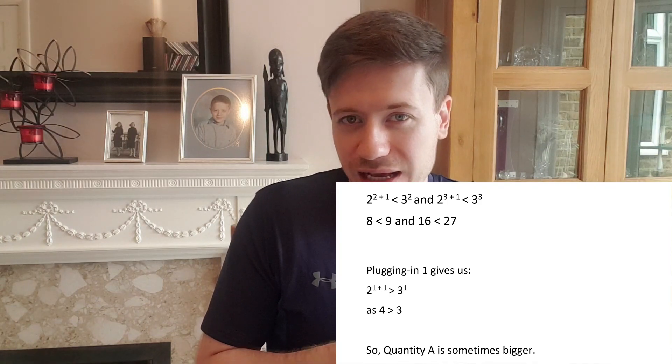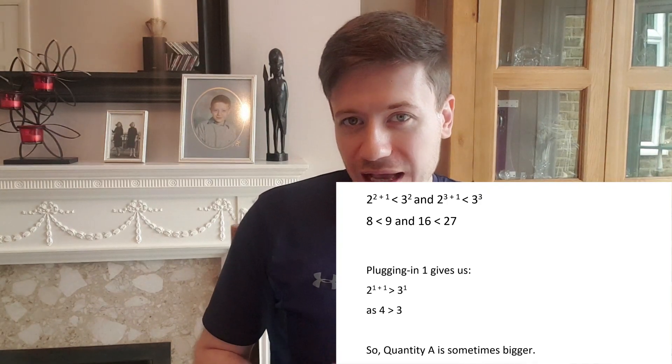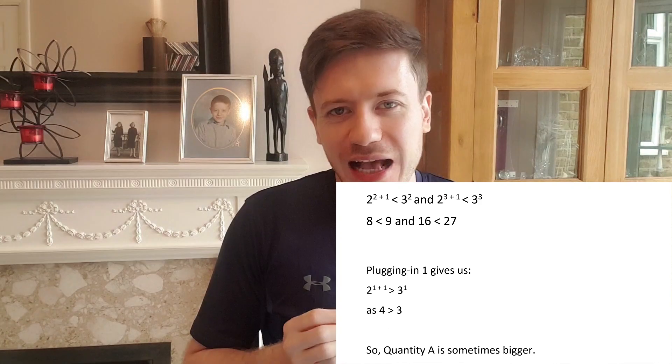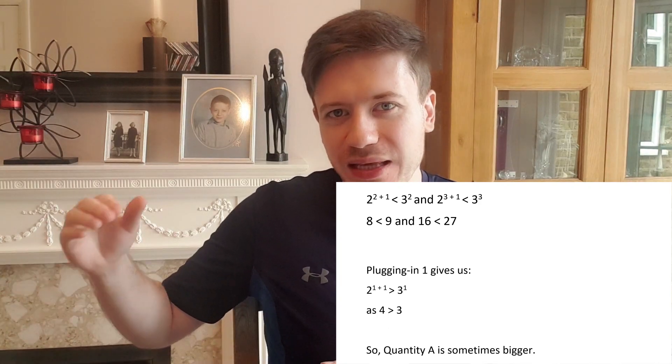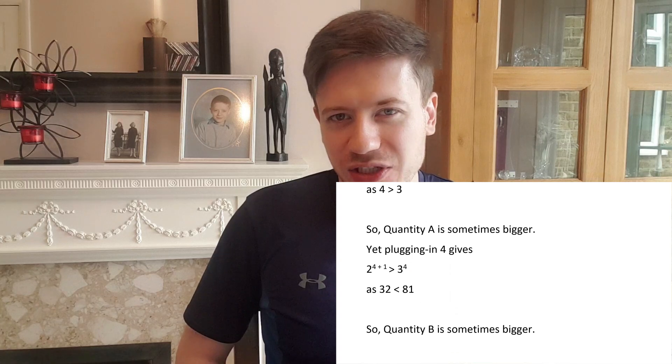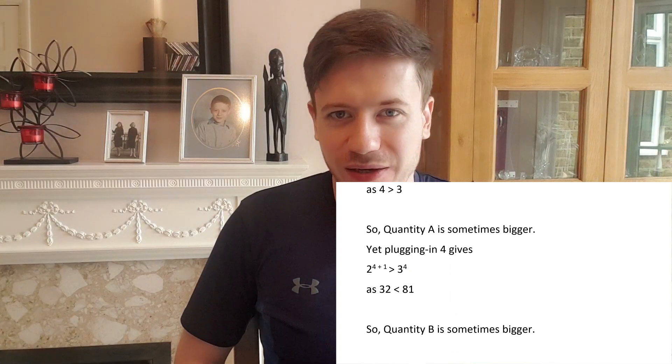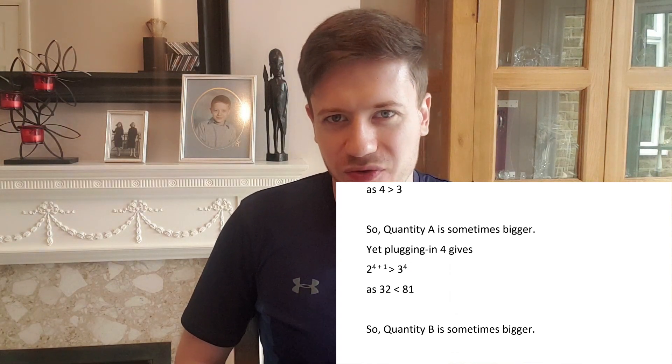So the smallest integer x could be would be 1. That's the smallest extreme. Now x on the other extreme could be a thousand or a billion but that's too hard for this question. So why don't we just pick something like 4. You can see that when we plug in 1 we actually get that quantity A is bigger. 4 is bigger than 3.